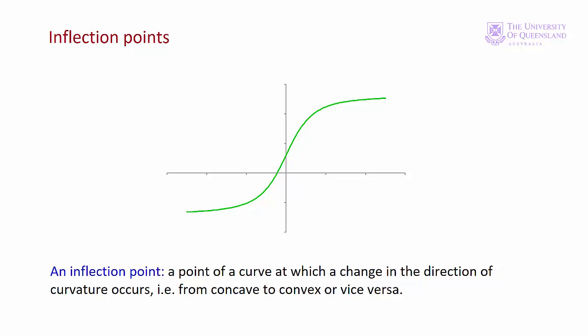In this example, going from left to right, the function goes from being convex to being concave. We have an inflection point somewhere here, and we'll see how to find that inflection point later. Remember, when a function is convex the second derivative is greater than zero, and when it's concave the second derivative is less than zero.